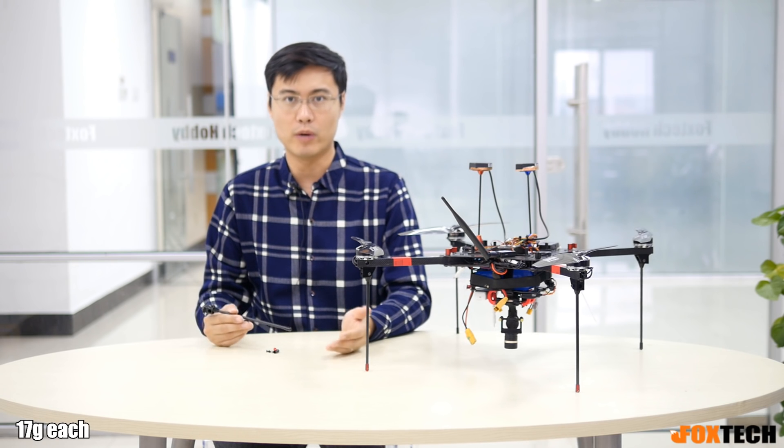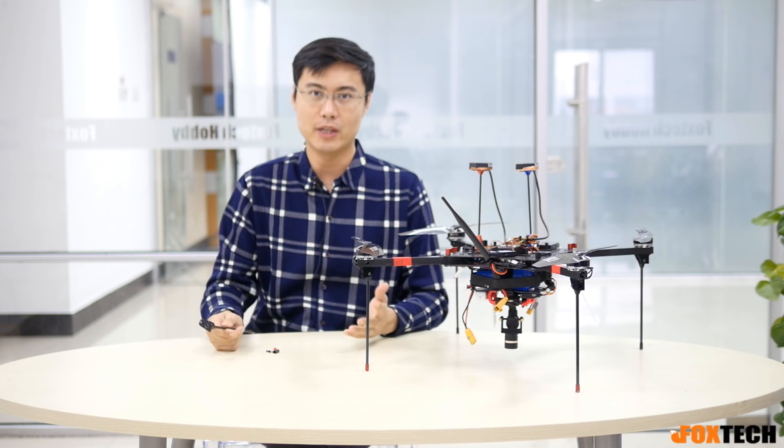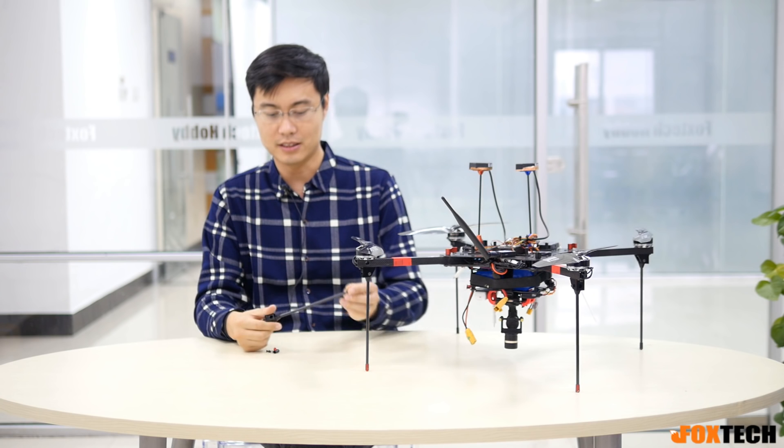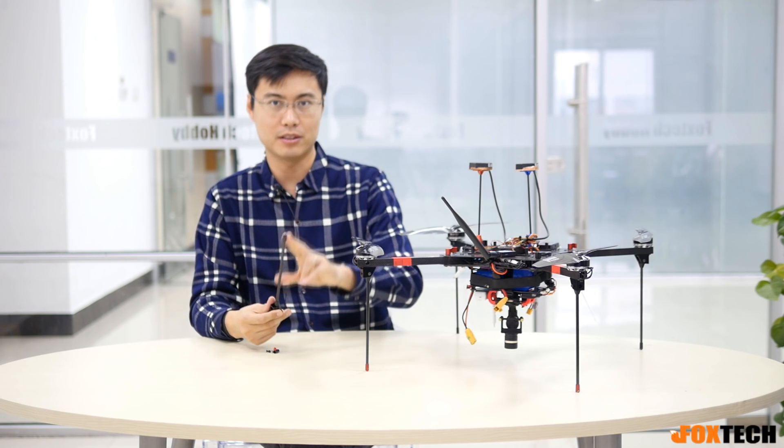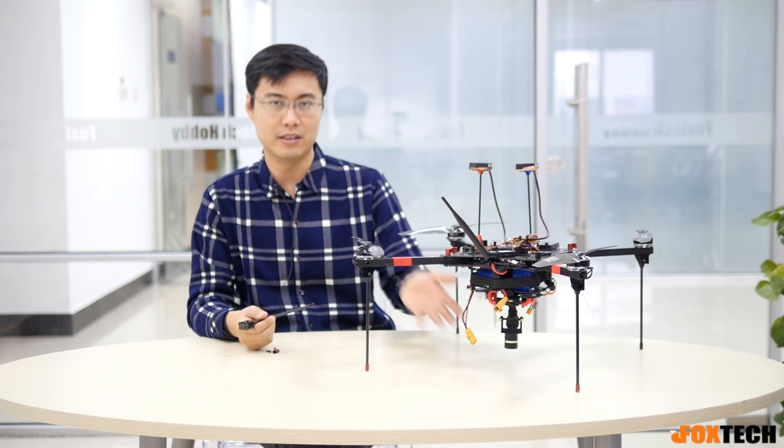Some people may ask, why don't you use the automatic folding landing gear on this machine? One reason is I like the single landing gear way, in this way, because I can adjust the length of this carbon fiber tube to adapt different gimbal and different batteries.